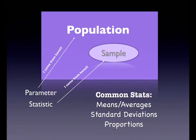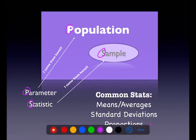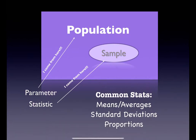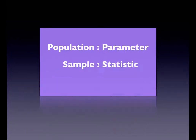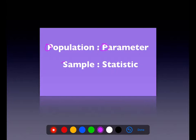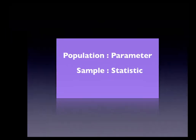I'm pretty confident you've heard of means and averages. Proportions we've done in Chapter 1. You may or may not have heard of standard deviations yet — we'll get to that in Chapter 2. We specifically talked about proportions in Chapter 1: we had those Dixie cups of beads and we looked at the proportion of red beads. And I'm sure you've heard of an average before.